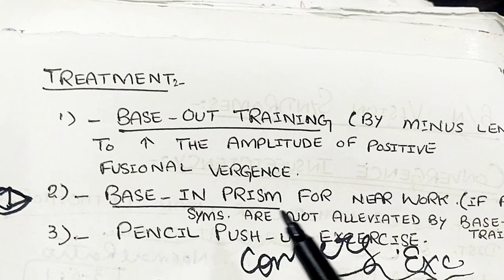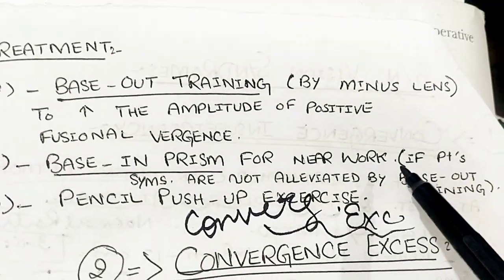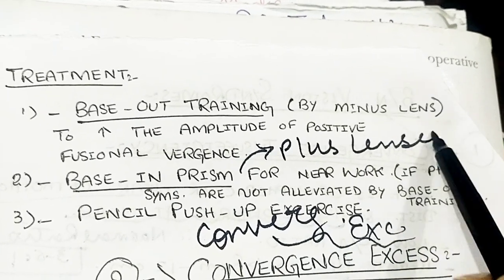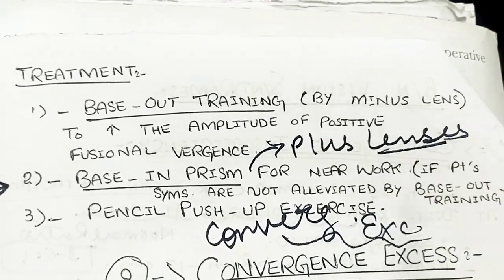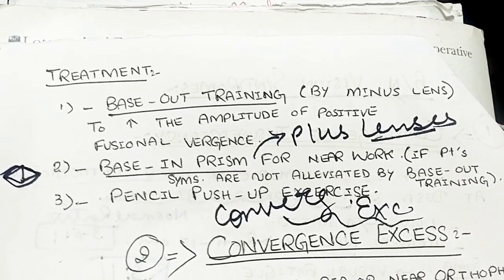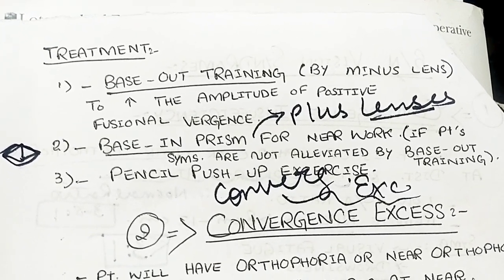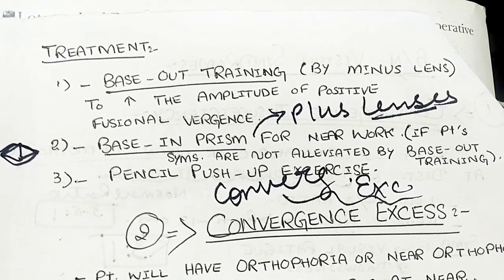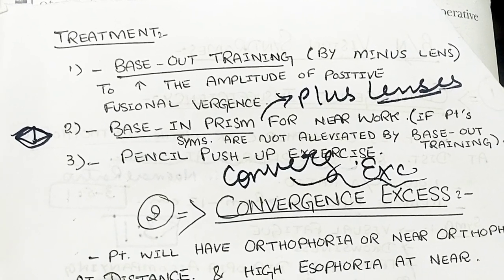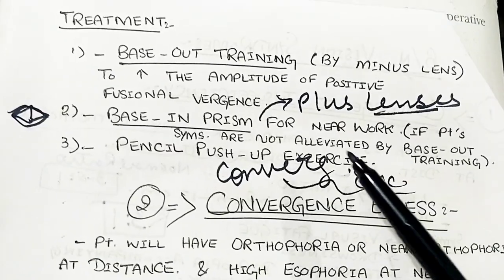The most relieving method for dealing with convergence insufficiency is by base-in prisms for near work, meaning we dispense plus lenses especially at near. One of my patients recently came to me — a heavy user of a microscope — who was continuously complaining of near asthenopic symptoms, diplopia at near while working at a laptop and microscope, and severe headache symptoms. I relieved this patient by base-in prisms for near work.